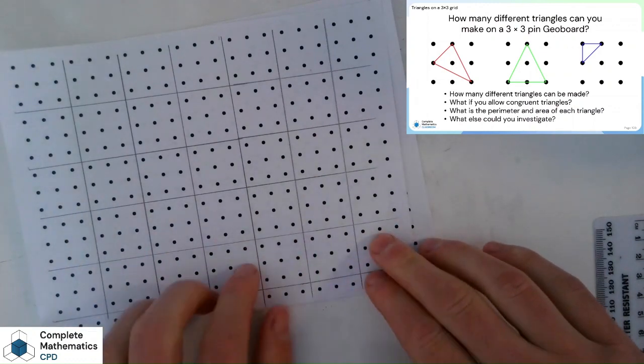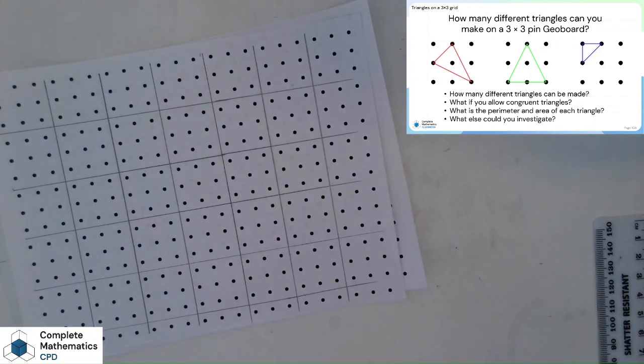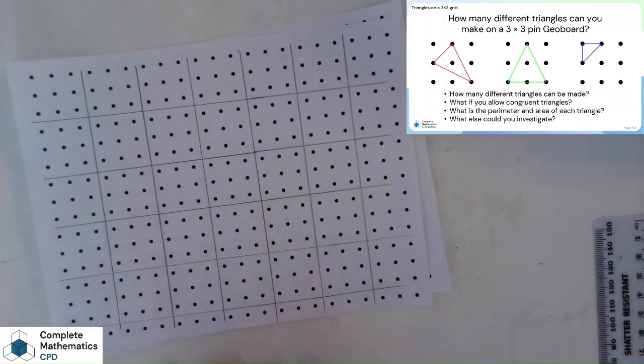And we can quickly count the dots if we want by knowing our 9x table. Obviously an extension to this task could be to change the grid size, that's a natural extension to this task. But in this particular case we're doing a 3x3.